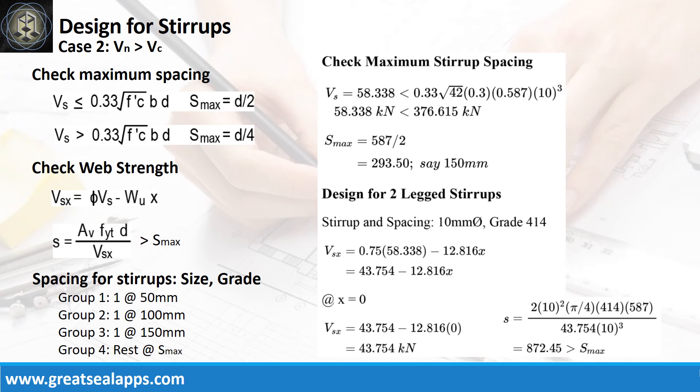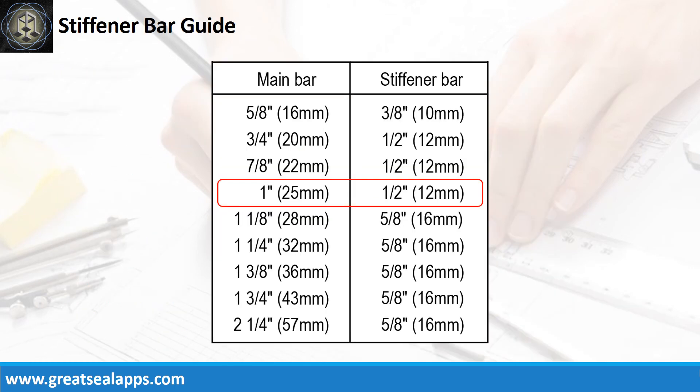The maximum stirrup spacing is 150 mm. The web strength at face of support is 43.754 kN with initial spacing at 872.45 mm. The spacing of stirrups are as follows: 1 at 50 mm, 1 at 100 mm, rest at 150 mm.